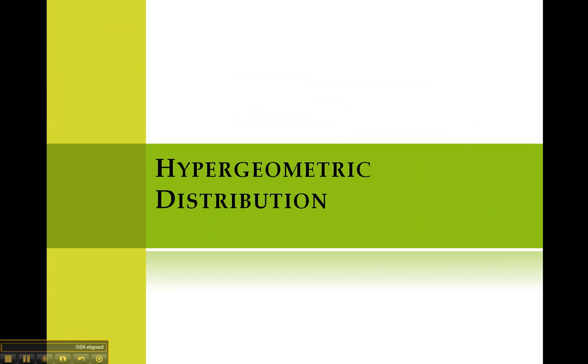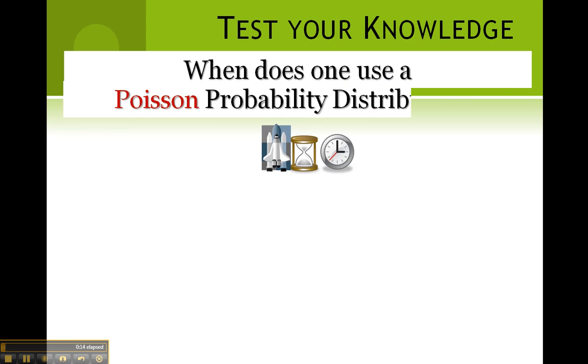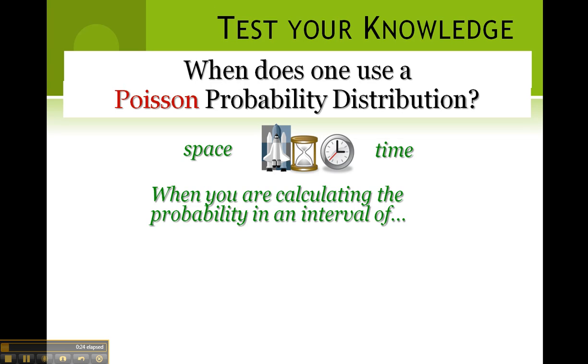Hypergeometric distributions. First, let's test your knowledge. When does one use a Poisson probability distribution? When you are calculating the probability in an interval of space or time.